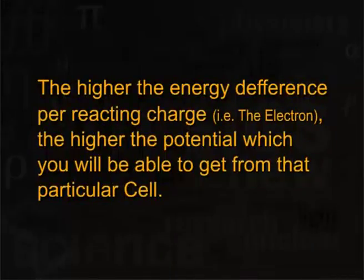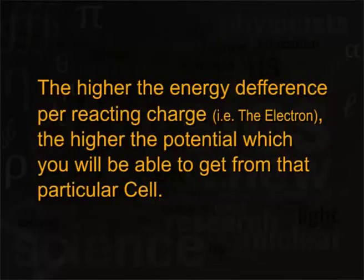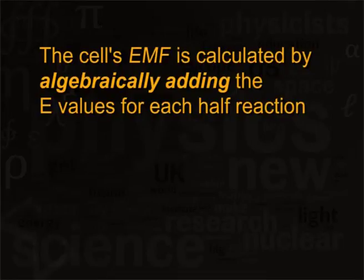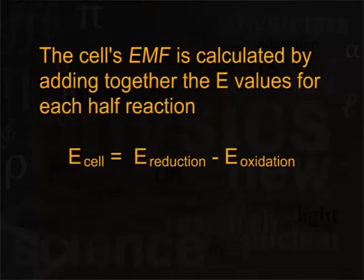The higher the energy difference per reacting charge — that is, per electron — the higher the potential you will be able to get from that particular cell. The cell's EMF is therefore calculated by adding the E values for each half reaction. Mathematically, E of the cell equals E of reduction minus E of oxidation.